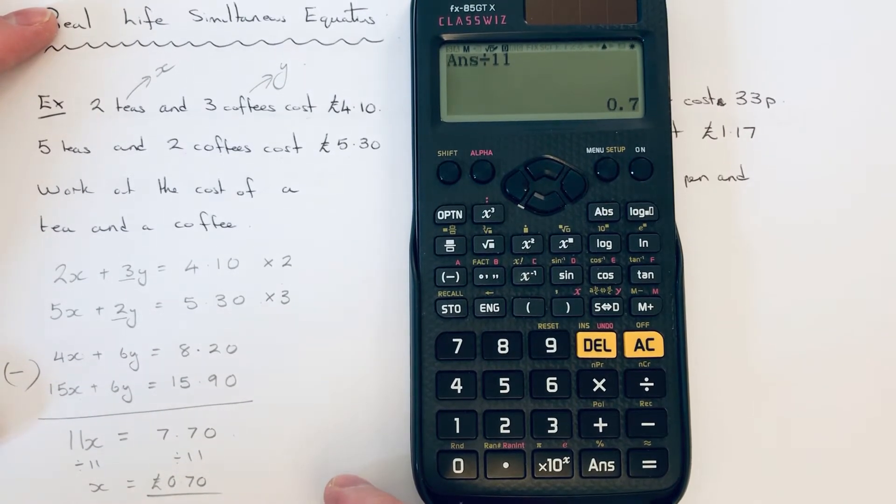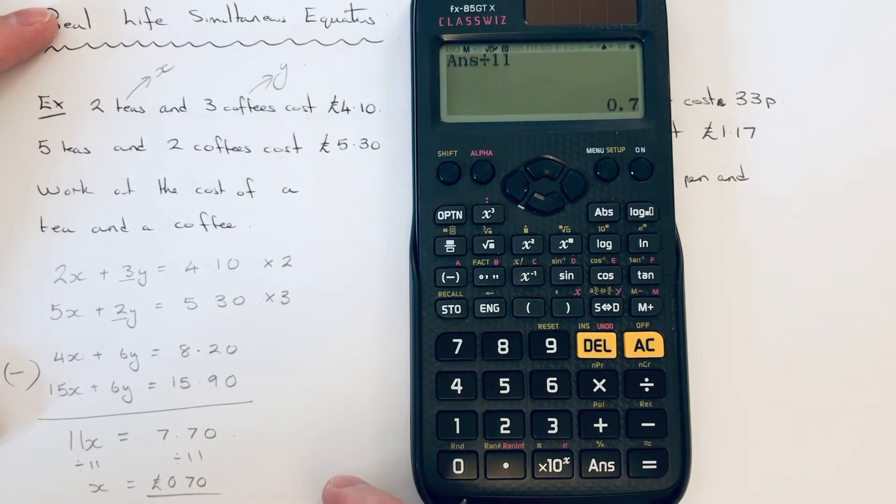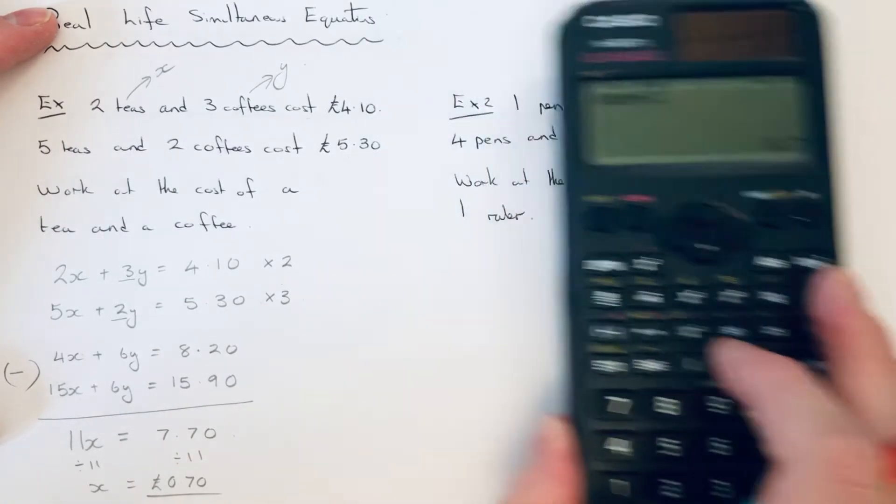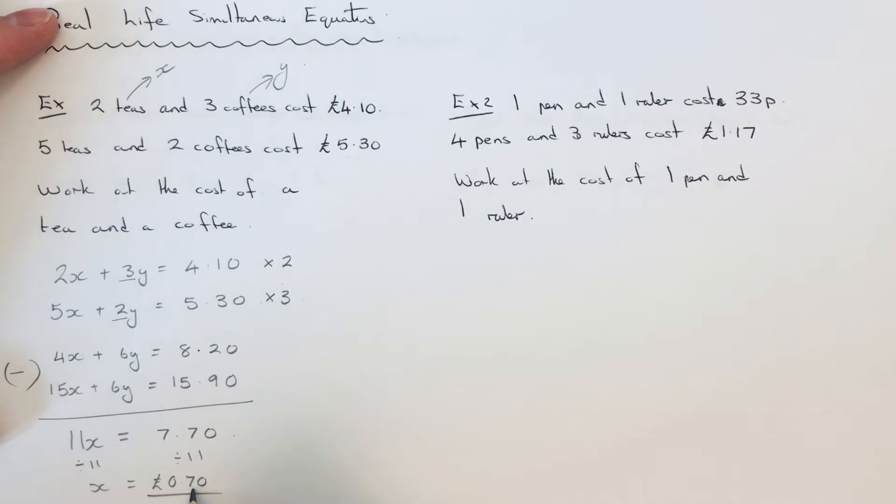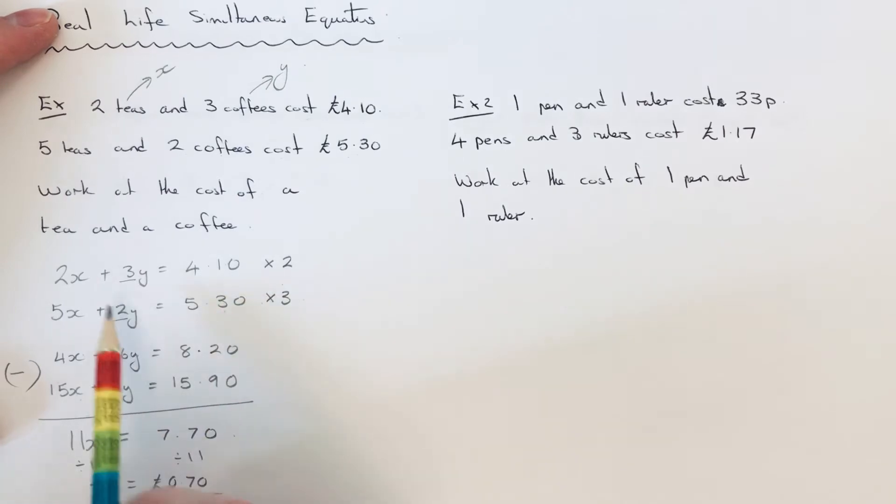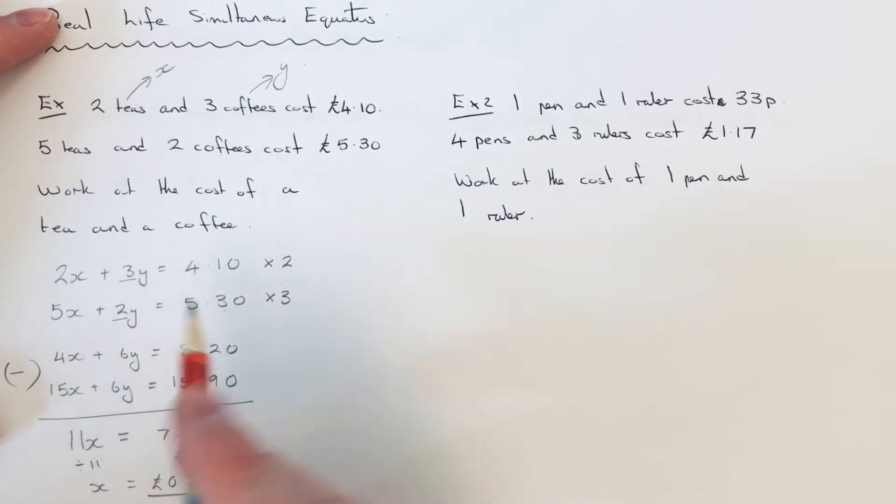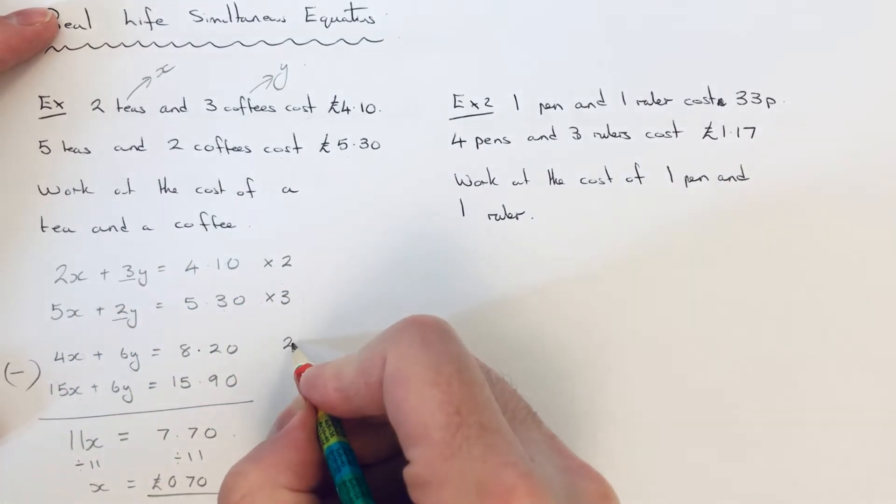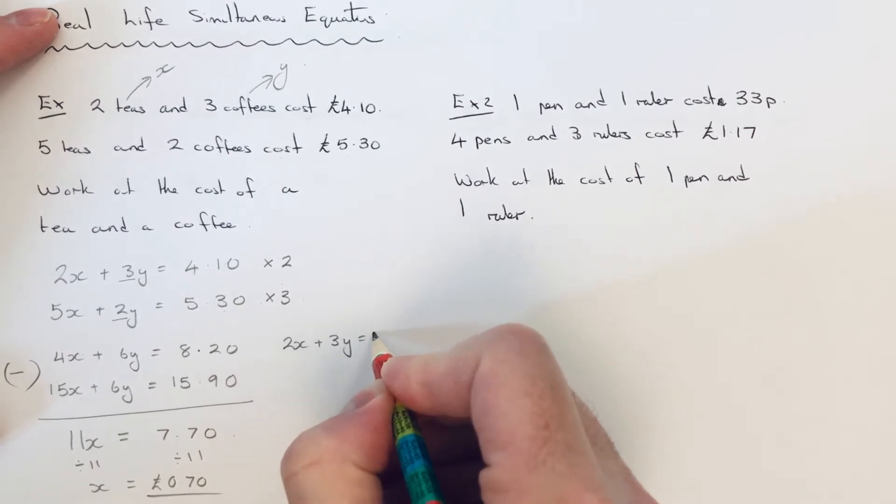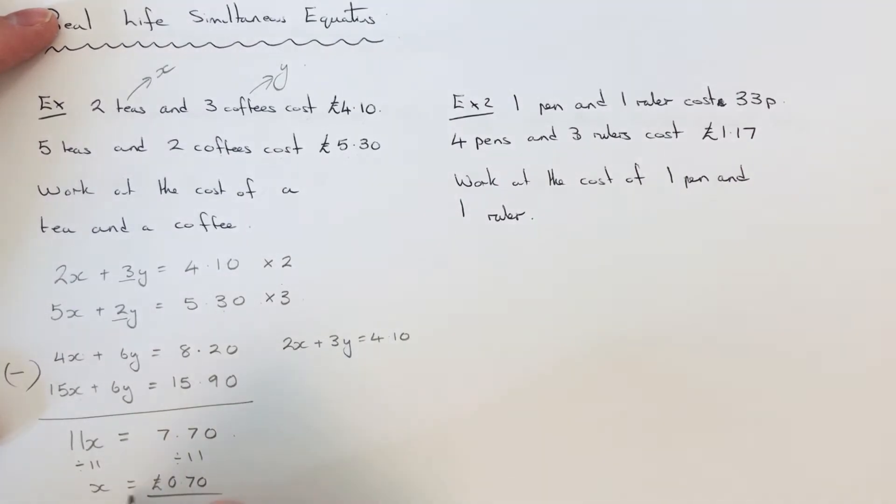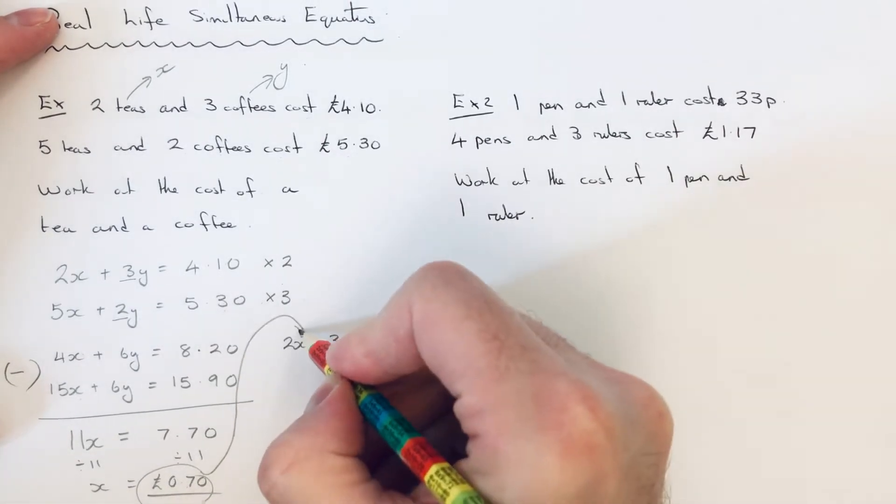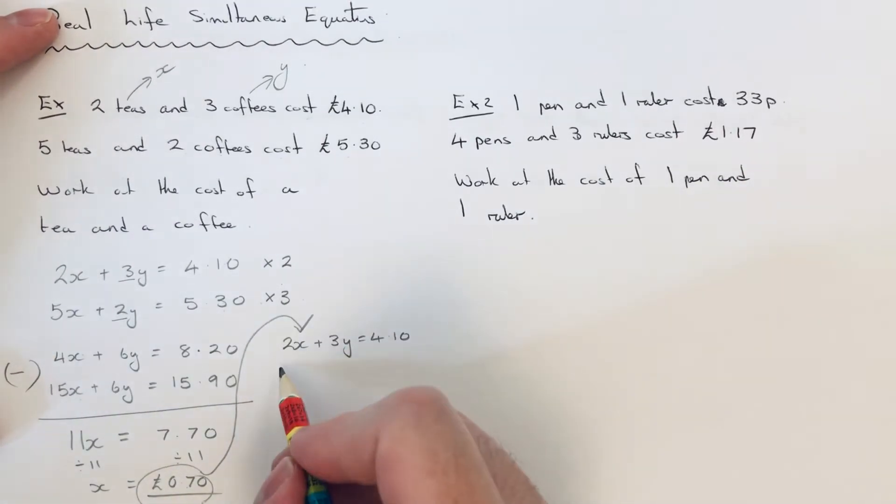So we just need to now work out the price of a cup of coffee. So we can do this by substituting 70p back into one of the first two equations. I'm going to pick the first equation. It doesn't really matter here. So I'll just write out the first one. So we know that x is 70. So we can put this into this equation by doing 2 times 0.7.